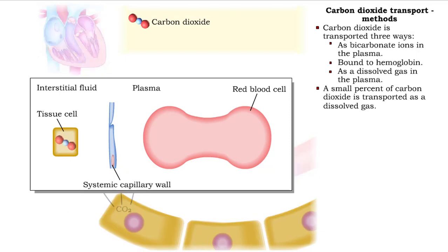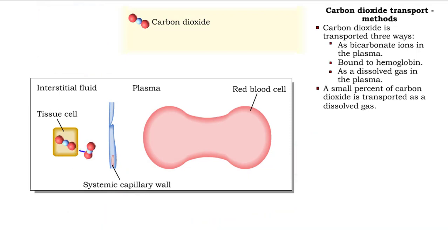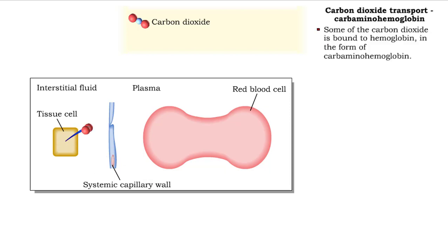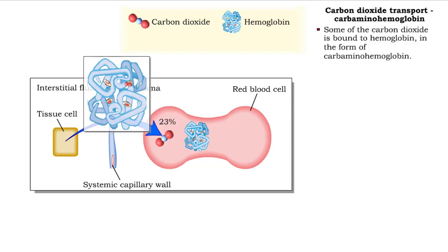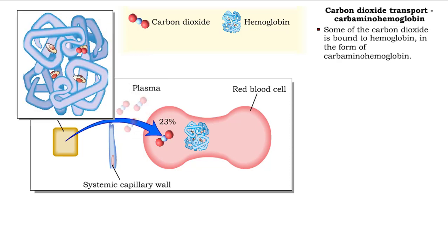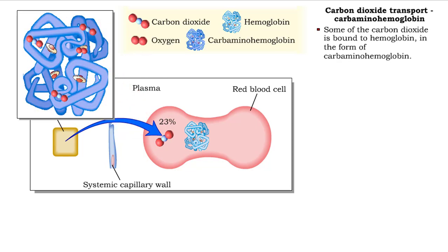A very small percent of carbon dioxide is transported in the plasma as a dissolved gas. A slightly larger percent of the carbon dioxide is transported bound to hemoglobin as carbaminohemoglobin.